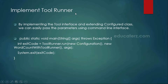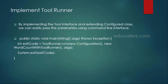Earlier, in other programs, in the main method itself we used to write the entire driver code — creating the job object, configuration object, setting up mappers, reducers, and everything. But when you want to implement the ToolRunner, in the main method you just need to call the run method: ToolRunner.run.